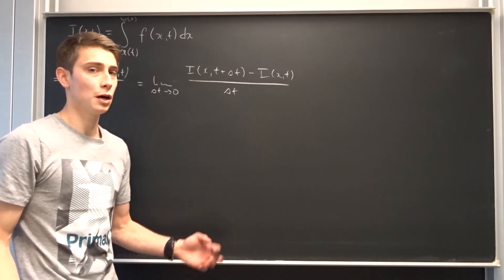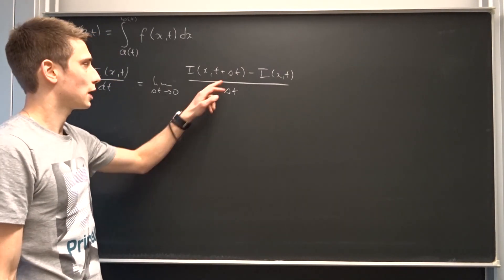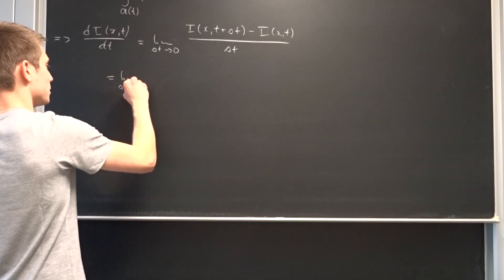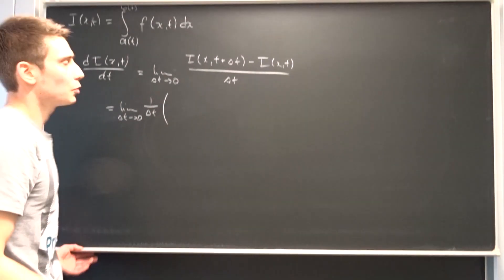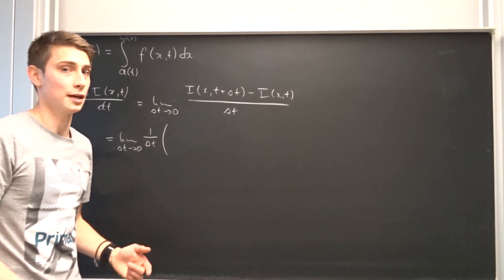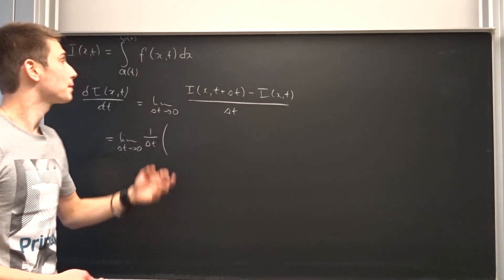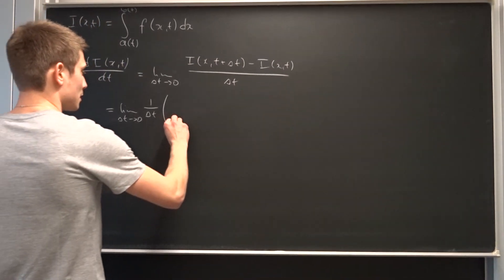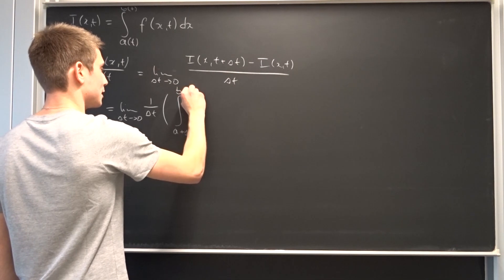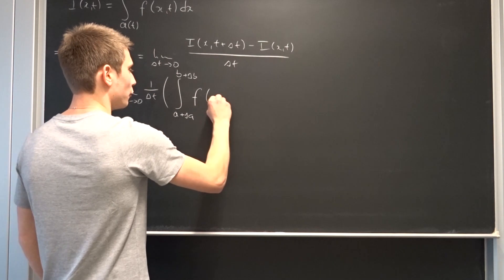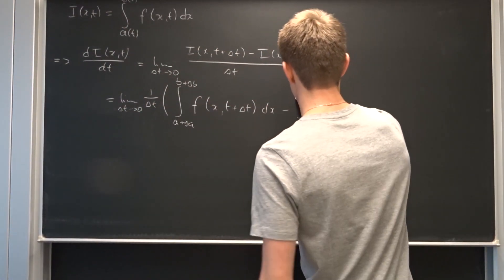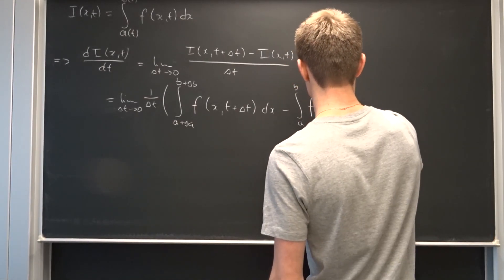What we can do now is factor out this 1 over delta t, and then plug all of our new information into our integral. So what we end up with is the limit as delta t approaches zero of 1 over delta t times. Remember, our upper and lower bounds are also dependent on t. So our lower bound is now a plus delta a up to b plus delta b. Our first integral goes from a plus delta a to b plus delta b of f of x and t plus delta t, times dx, minus the original integral from a to b of f in terms of x and t, times dx.